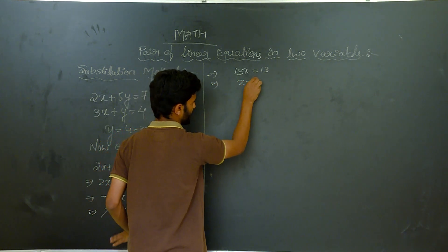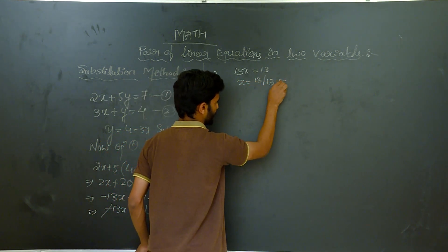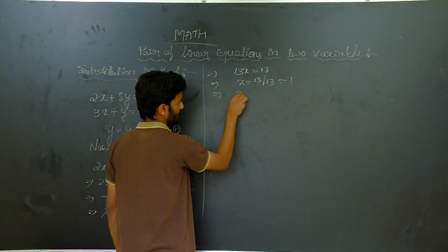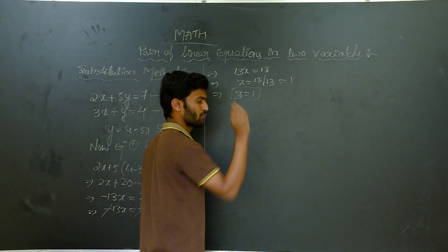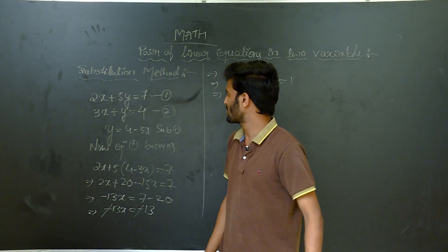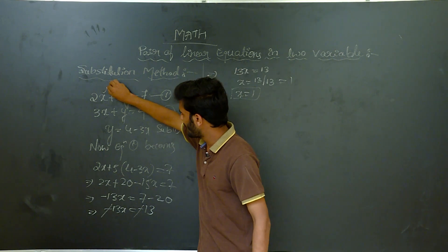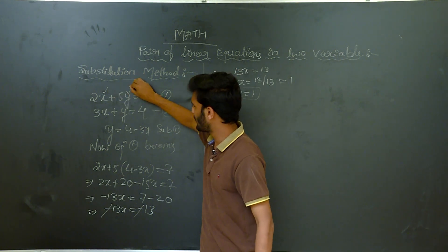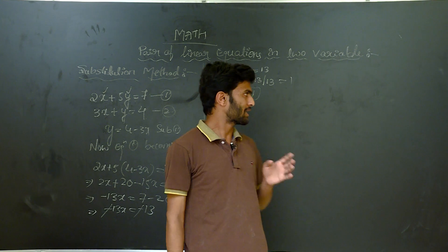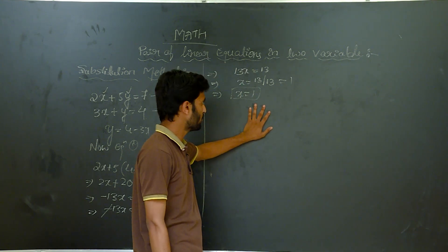Since both sides are negative, the negatives cancel. So we get 13X equal to 13, which implies X equals 13 divided by 13. Therefore the value of X equals 1. But we still need to find the value of Y, as the equation has two variables.